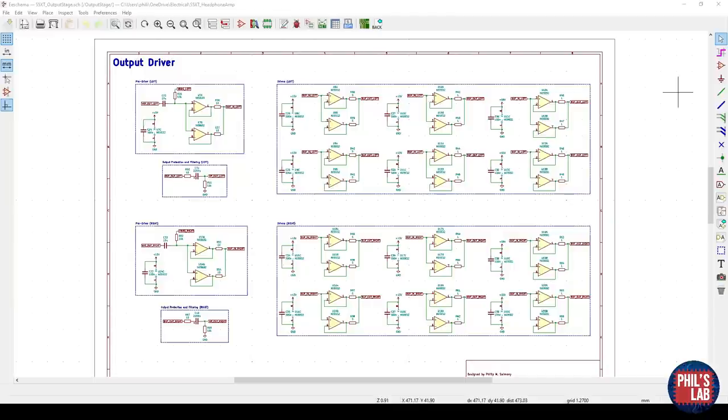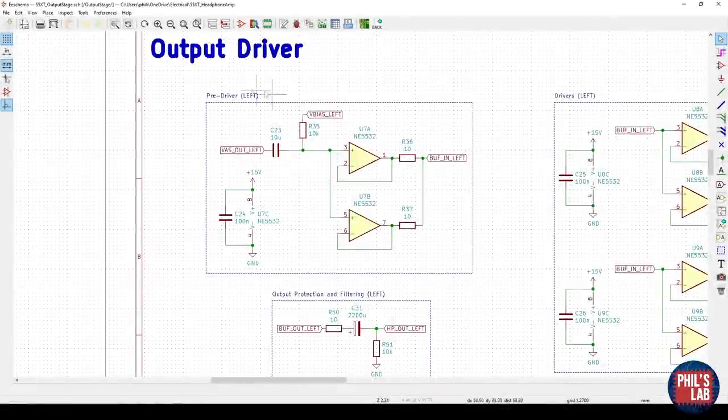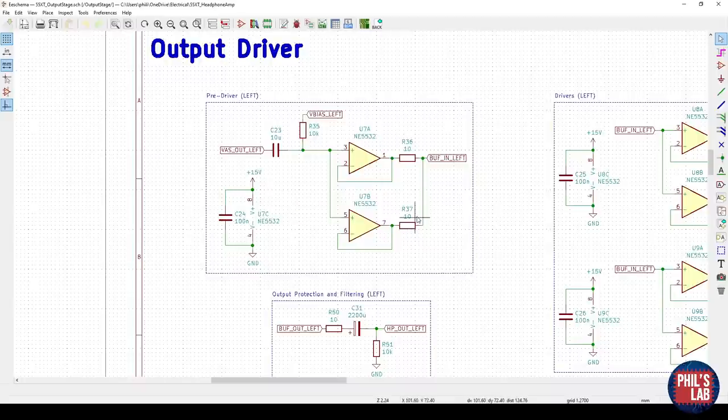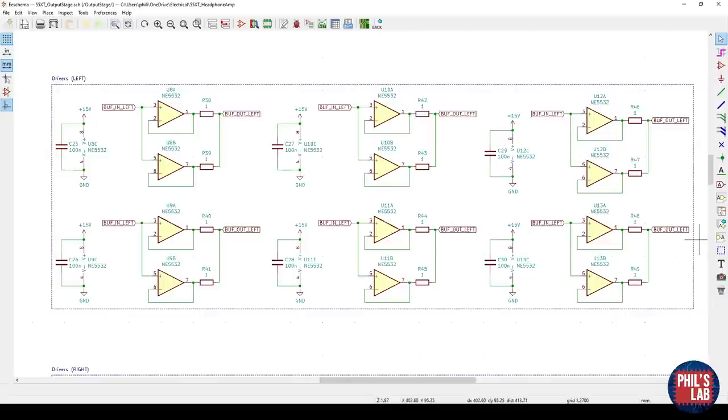And finally we arrive at the output stage of the amplifier, which is to me the quirkiest part of the design. This is the circuit diagram. A bit daunting, but it's basically all the same thing. Let's have a look at the top left first. I've called these the pre-drivers. Basically they're unity gain buffers which feed the output drivers. Since we have 12 of the output and provide an interface between the volume control stage and the output stage.